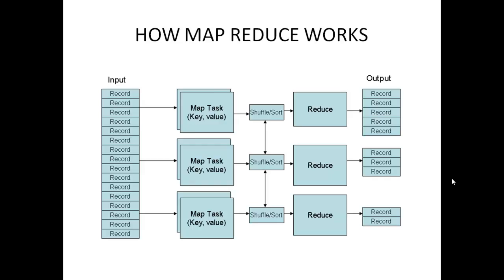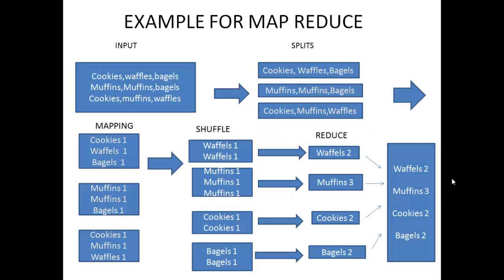In this example, look at the picture. The input is divided into splits of equal size. Then the mapping is performed which produces key-value pair. That is, key-cookies with count 1 as value. Similarly for waffles, bag, bagels and rest of item.